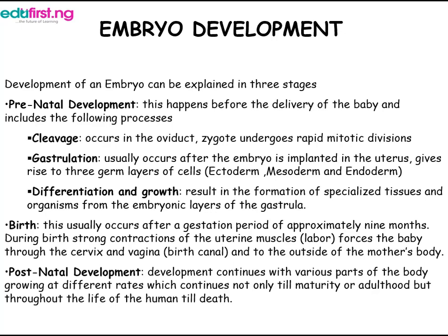Birth usually occurs after a gestation period of approximately nine months. During birth, strong contractions of the uterine muscles — labor — force the baby through the cervix and vagina and to the outside of the mother's body.